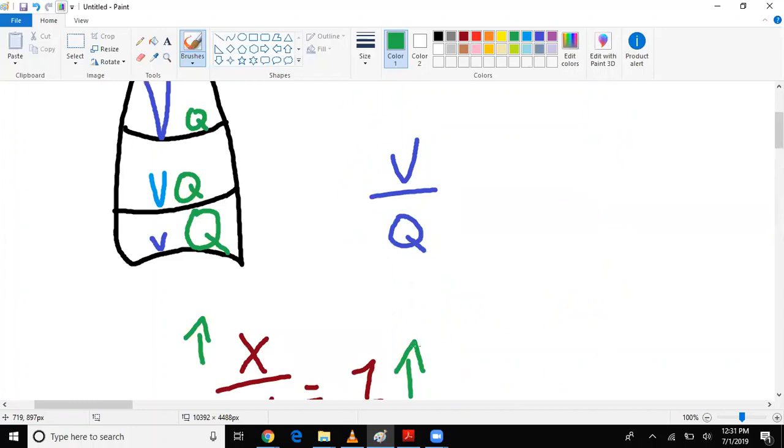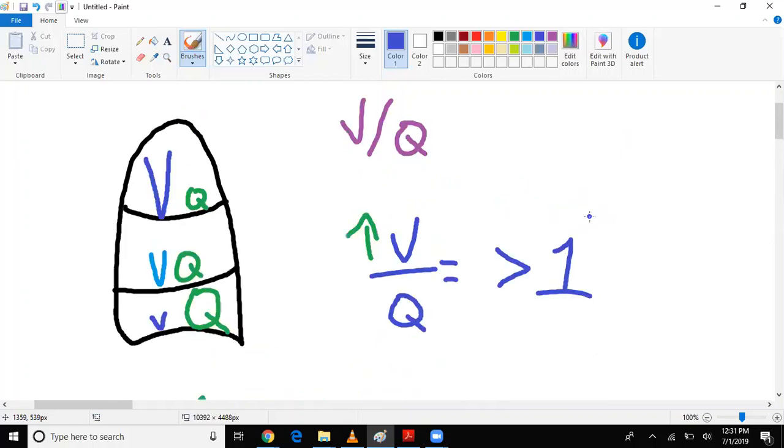Right, greater than 1. So therefore, if V and Q are equal, if they match, then VQ will just equal 1. Exactly. And therefore, that will be right here—that's 1.